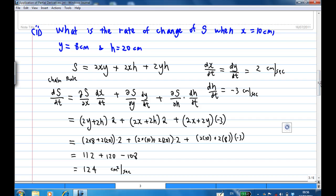First, we know the surface area is S equal to 2xy plus 2xh plus 2yh. And dx/dt and dy/dt are equal to 2 cm per second, and dh/dt is minus 3 cm per second.